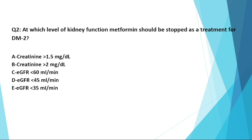Second question: at which level of kidney function should metformin be stopped as a treatment for type 2 diabetes? Options include creatinine more than 1.5 mg/dL, creatinine more than 2 mg/dL, eGFR less than 60, eGFR less than 45, or GFR less than 35 ml per minute. The correct answer is E — when GFR is less than 35 ml per minute.